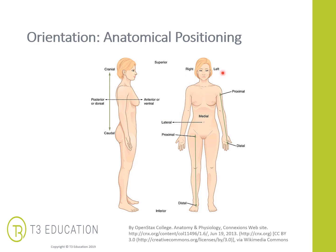Right and left need no explanation. We then have dorsal — the posterior or dorsal aspect refers to the back of the body or a bone. The opposing term is anterior or ventral, referring to the front. In terms of the spine, we have cranial, meaning towards the cranium, or caudal. Having this understanding of these terms will help make sense of the names of various bones and muscles.